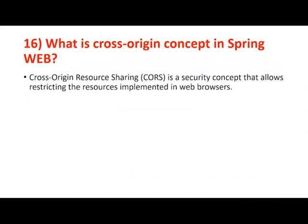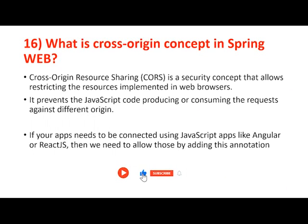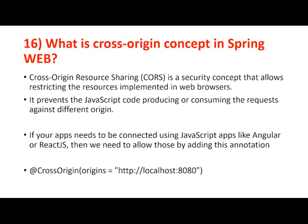What is the cross-origin concept in Spring Web? CORS — Cross-Origin Resource Sharing — is a security mechanism. If a request is coming from web browsers using JavaScript applications like Angular, ReactJS, or any Node-based applications running in the browser, by default it is not allowed. On the Spring Web application side, we have to add the @CrossOrigin annotation mentioning the URL — for example, port 8080, 4200, 9000, or 33000, depending on the port the front-end application runs on. If you mention this, the request is allowed; otherwise it says CORS is blocked.